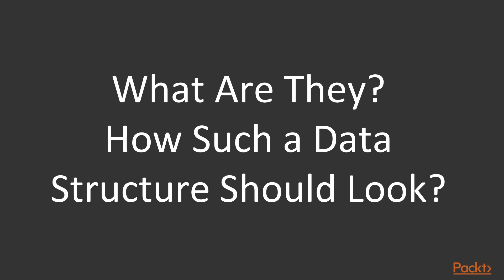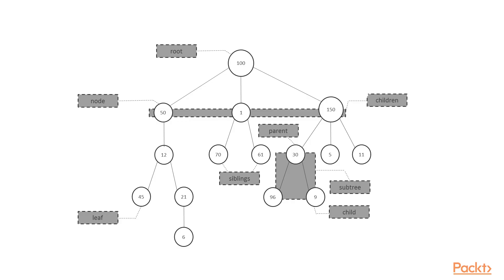What are trees? Do you have any ideas about how such a data structure should look? If not, let's take a look at this diagram, which depicts a tree with captions regarding its particular elements. A tree consists of multiple nodes, including one root — 100 in the diagram. The root does not contain a parent node, while all other nodes do.